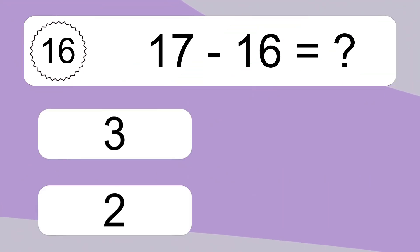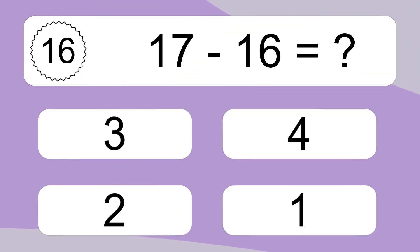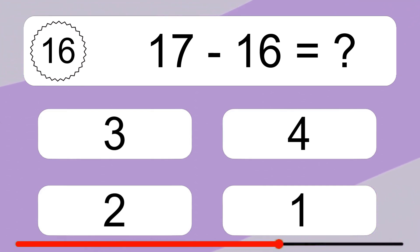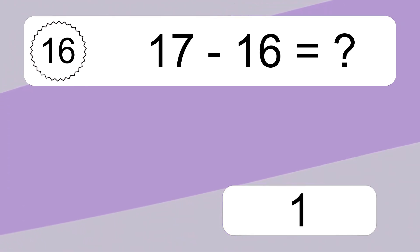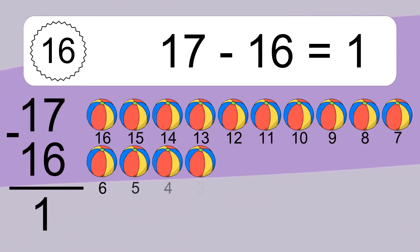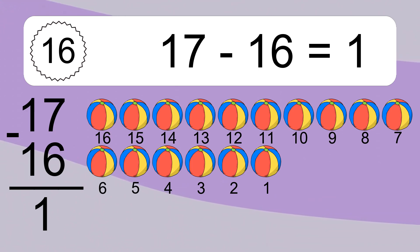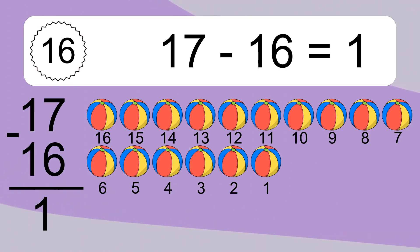17 minus 16 equals what? 17 minus 16 equals 1. Let's count it. 16, 15, 14, 13, 12, 11, 10, 9, 8, 7, 6, 5, 4, 3, 2, 1.